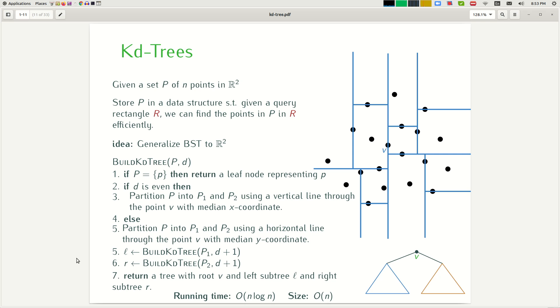Sometimes you could store additional information inside these nodes. So for example if you want your data structure to count the number of points inside the query rectangle you would store the number of points inside the subtree of any internal node and so on. When you want to solve specific problems you might modify the data structure slightly, but that's basically the main idea of building KD trees. In the next videos we're going to look at an analysis of KD tree in particular we're going to analyze the query time of the data structure.